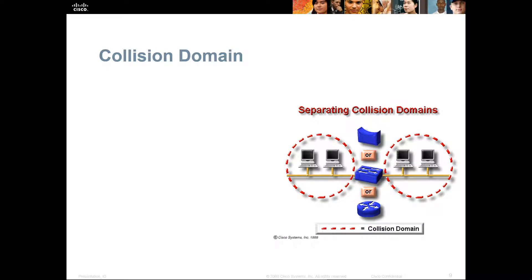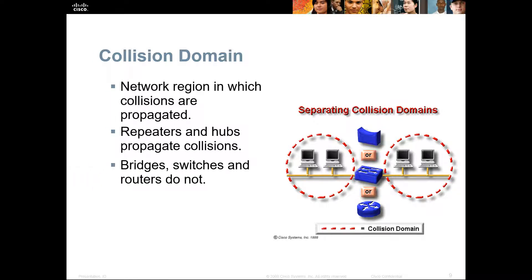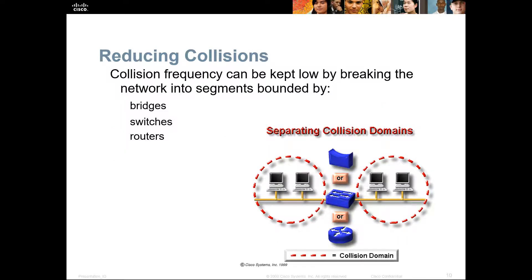A collision domain is where devices will interfere with one another when they detect someone else communicating — essentially, if two are talking at the same time, their signals cause a collision. Collisions are normally propagated by hubs. On a switch, each port has its own individual collision domain. Repeaters and hubs propagate collisions; bridges and switches do not. So we can reduce collision domains by using bridges, switches, and routers.